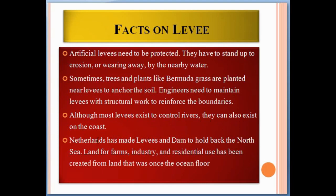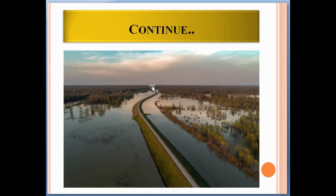Although most levees exist to control rivers, they can also exist on the sea coast. Countries like the Netherlands have built levees and dams to hold back the North Sea water. Land for farms, industry, and residential use has been created from what was once the ocean floor. The Netherlands has managed North Sea water in a very smart way to utilize the land for farming, industry, and residential purposes by constructing levees.